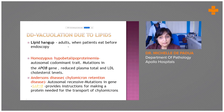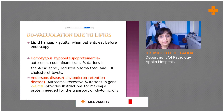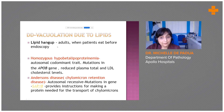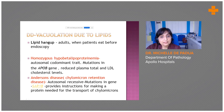Even if you find vacuolation due to lipids, it does not necessarily mean abetalipoproteinemia. One must keep in mind, especially in adults, a condition called 'lipid hangup' — the patient eats before the endoscopy and does not remain nil by mouth. In these cases, fine vacuolation can be found in the enterocytes, so we must keep this in mind before diagnosing this condition.